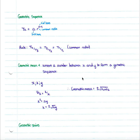A geometric mean: if you insert a number k between x and y to form a geometric sequence, you use the relationship y over k equals k over x, so therefore k squared equals xy, meaning k equals plus or minus the square root of xy. Your geometric mean is simply plus or minus the root of your first term times your second term.